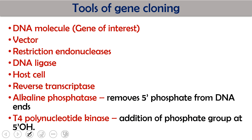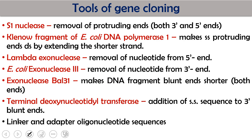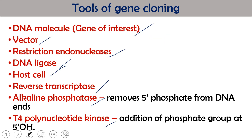This recombinant DNA will be transferred into bacterial cells, transformants will be selected, then it will be cultured, and ultimately the gene, DNA, or protein will be purified. So this is the basic story behind gene cloning. When we want to isolate the gene of interest and cut the vector, the tool used to cut or chop down the DNA is called restriction endonuclease.